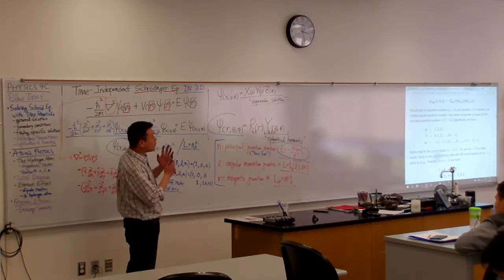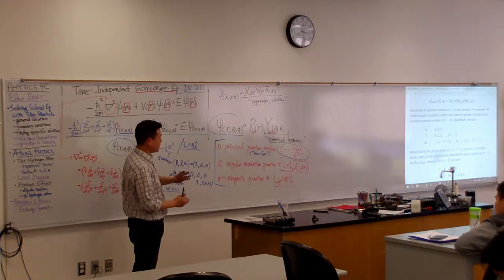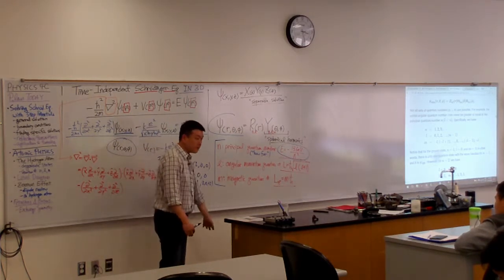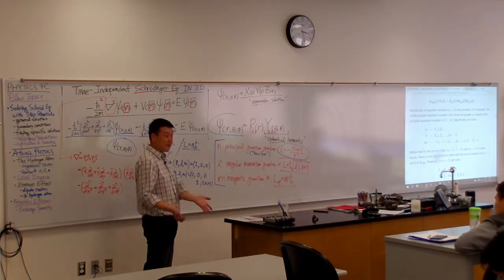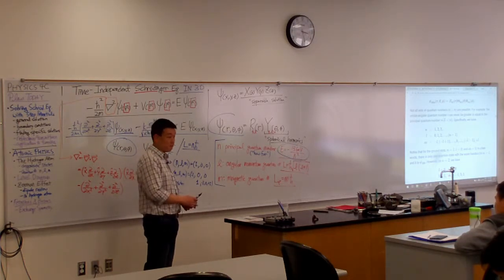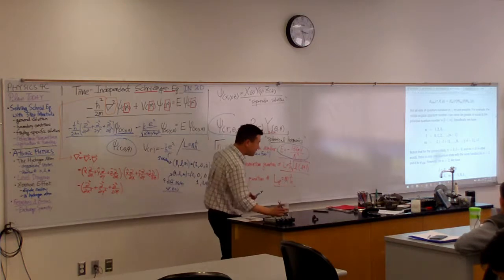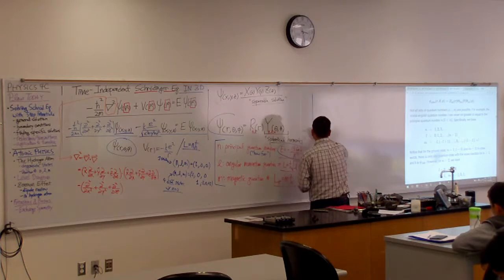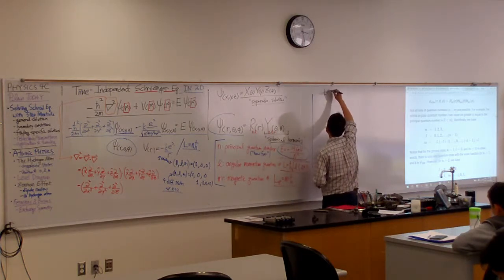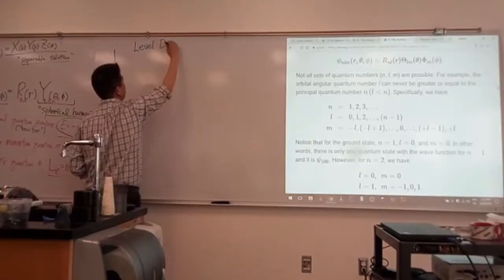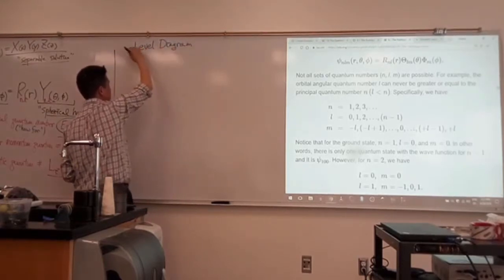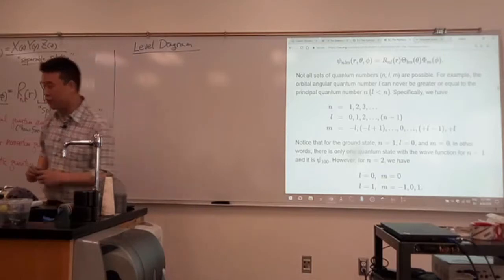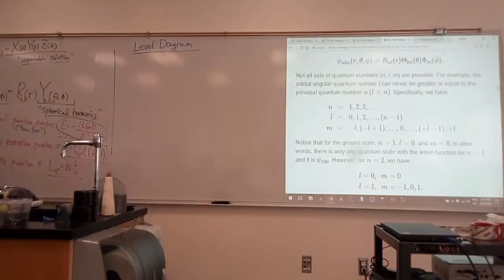So, one way of conveniently illustrating, like diagramming all of this, that these different quantum numbers and the fact that some of these states have the same energy is the level diagram. Let me just draw an example of energy level diagram, so that we're not just talking in vacuum. It's kind of a simple diagram. Let me draw mine.